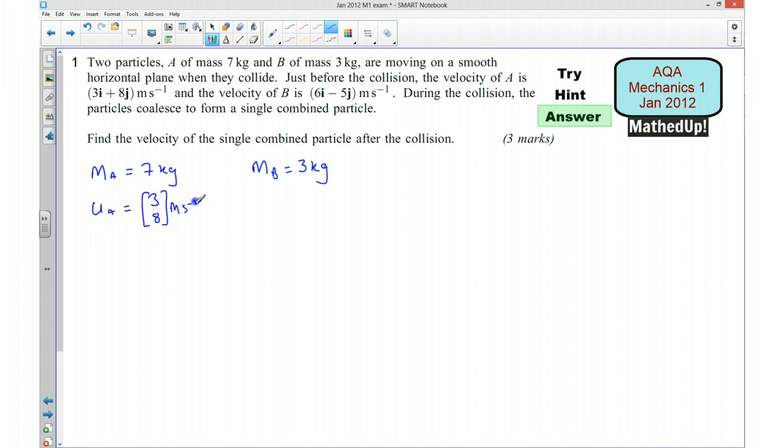That's meters per second and I also know the initial velocity of B which is 6i take away 5j or 6, -5. Okay and during the collision the particles coalesce and they form a single combined particle.